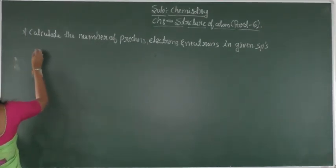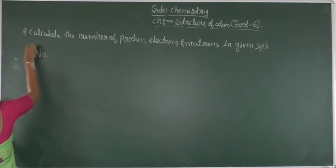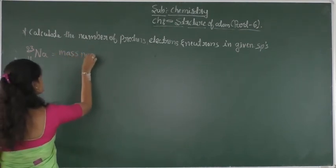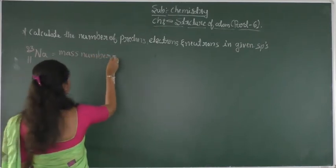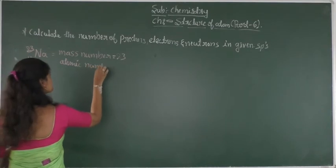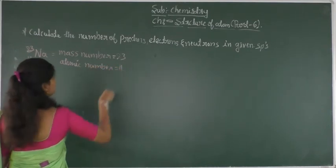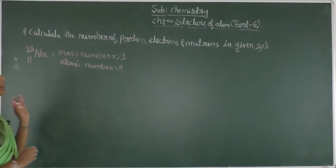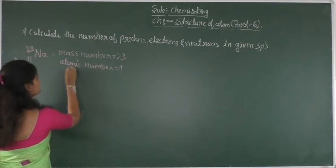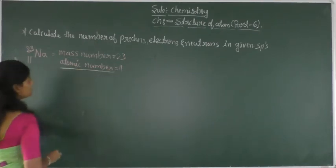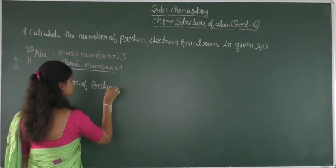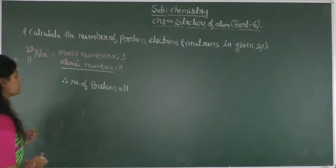Next one: Na-23 with atomic number 11. Here mass number is 23 and atomic number is 11. We have to find the total number of protons, neutrons, and electrons present in the sodium atom. Since atomic number equals number of protons, the number of protons is 11.